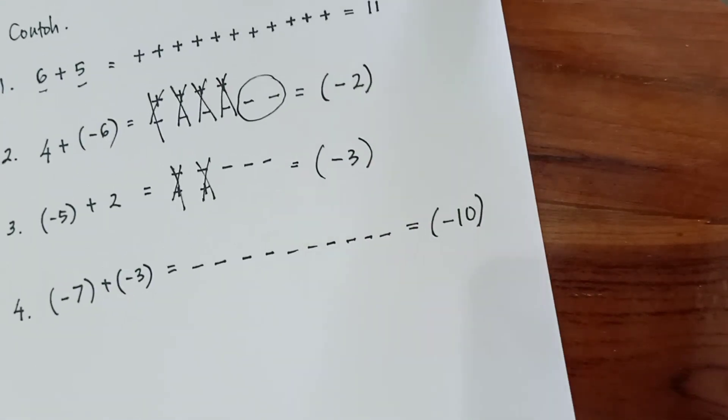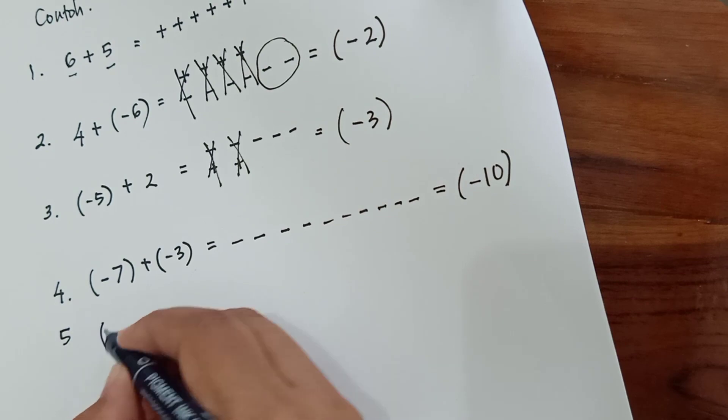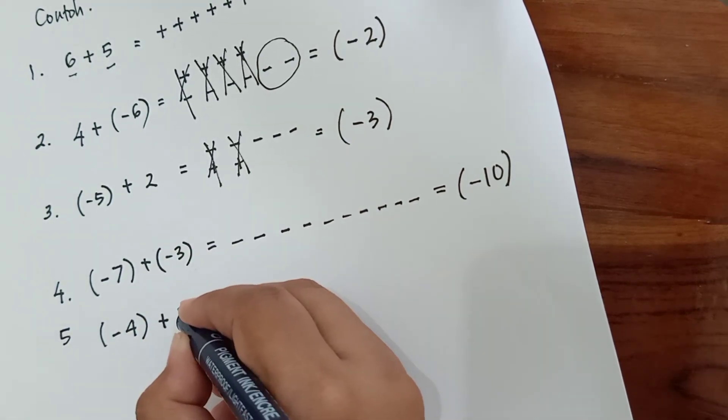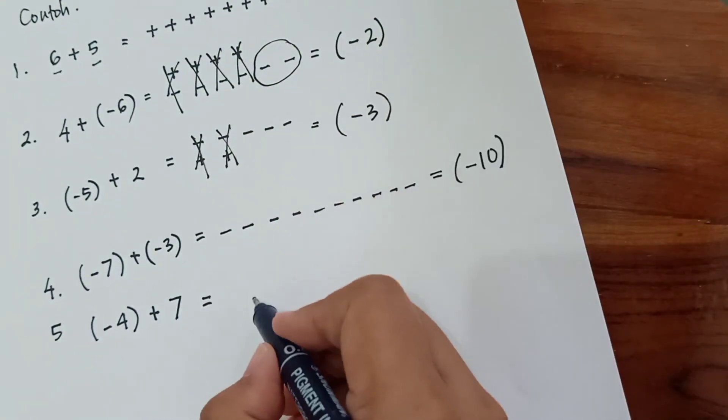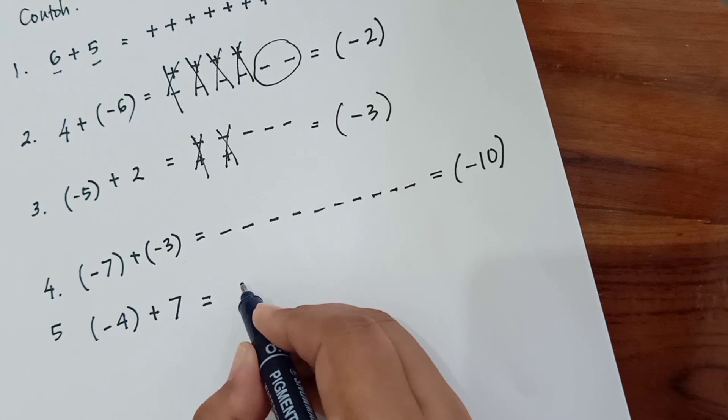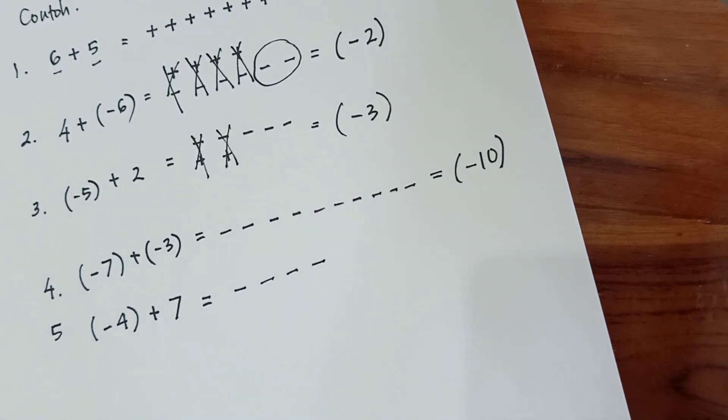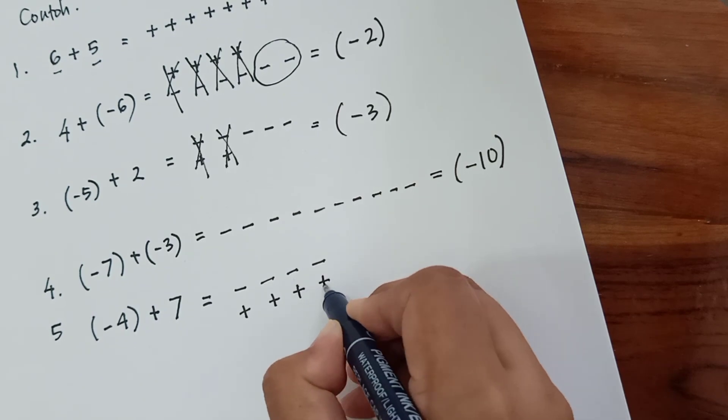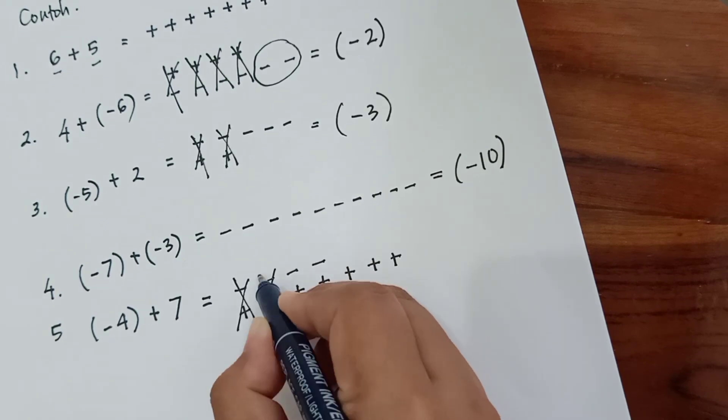Contoh terakhir, nomor 5. Negatif 4 ditambah 7 sama dengan, kita buat negatif sebanyak 4: 1, 2, 3, 4. Bawahnya bilangan positif atau tanda positif sebanyak 7: 1, 2, 3, 4, 5, 6, 7. Coret yang memiliki pasangan.